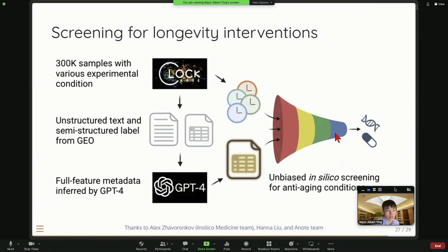So what's next? So the next step for us is, so now we have this 300k sample with different experimental condition. But everyone who uses GEO, they know that the metadata from GEO is actually not very structured. So they are not in standardized format. So it's impossible for us to do the analysis for all these samples. So what we do instead is we put this feature to GPT-4 and we prompt it to clean up this metadata for us. And then we use this to infer some information from the unstructured text. So with this full-feature metadata inferred by GPT-4, we can combine with the age prediction from the clock base. We can now do this unbiased in silico screening for anti-aging condition or aging accelerating condition, which has ever been done in any lab or group.